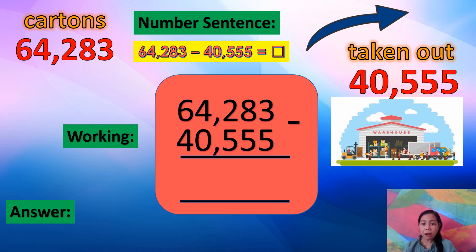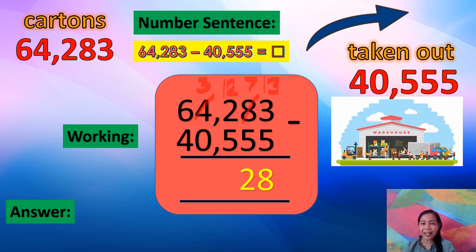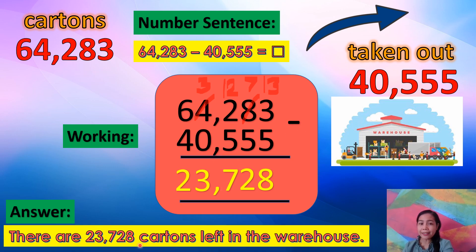Let's subtract. 3 minus 5 cannot be, so borrow 1 from 8. 8 becomes 7 and 3 becomes 13. 13 minus 5 equals 8. 7 minus 5 equals 2. 2 minus 5 cannot be, so borrow 1 from 4. 4 becomes 3 and 2 becomes 12. 12 minus 5 equals 7. Don't forget to write a comma. 3 minus 0 equals 3. 6 minus 4 equals 2. There are 23,728 cartons left in the warehouse.